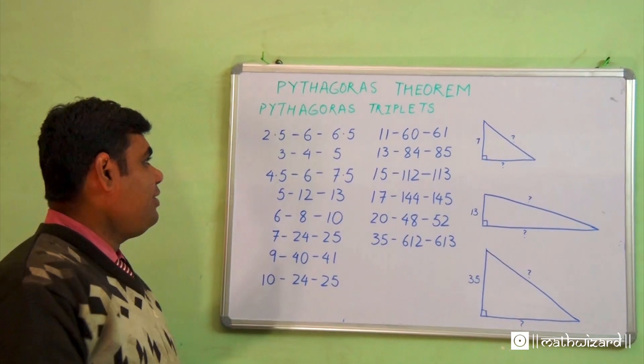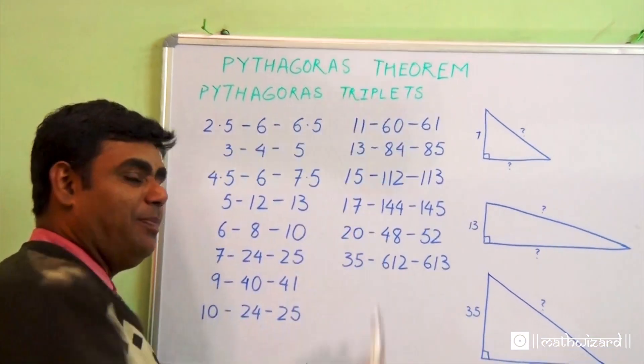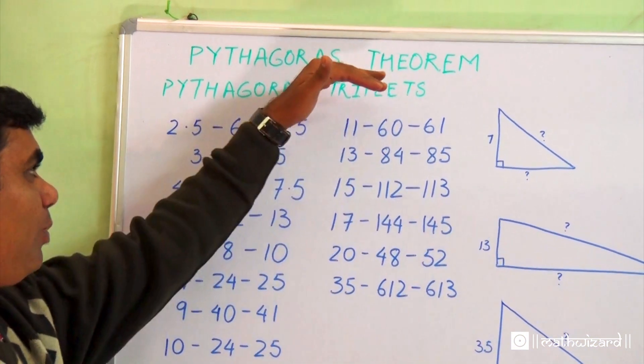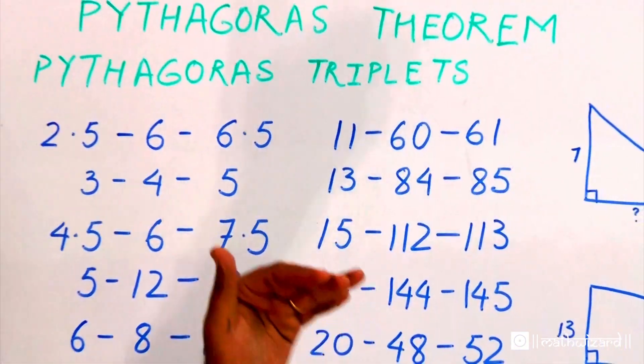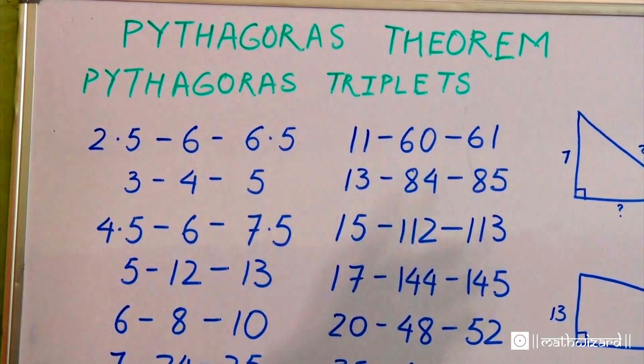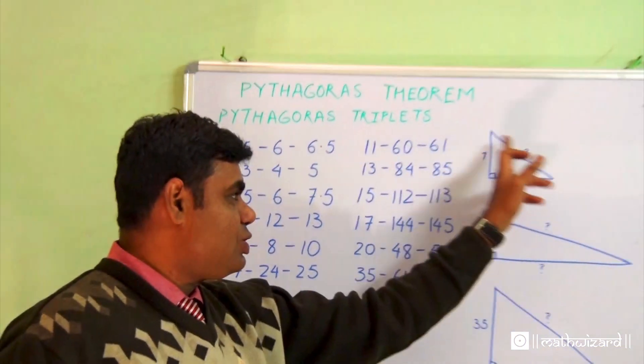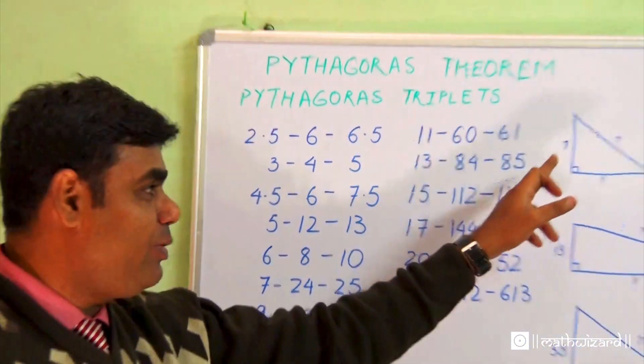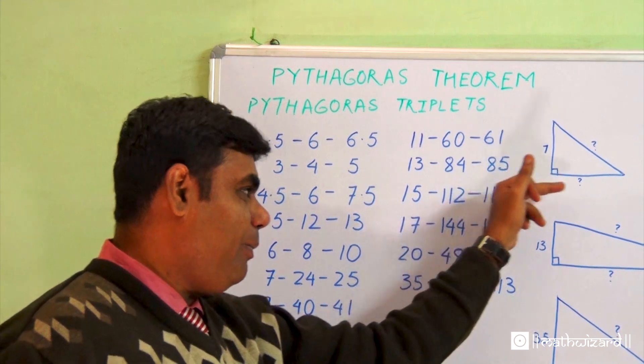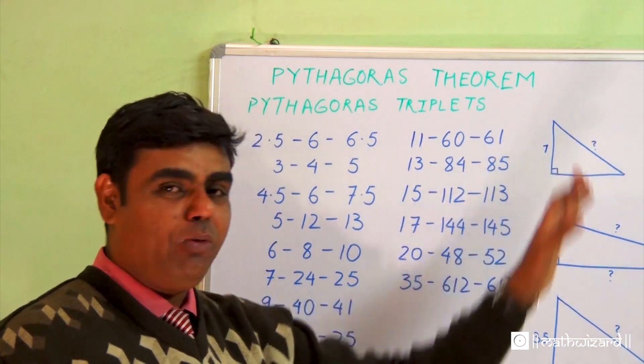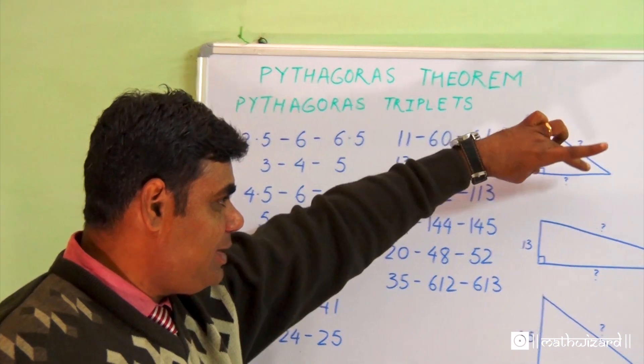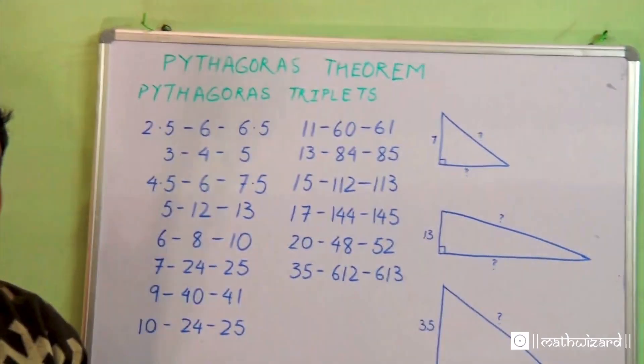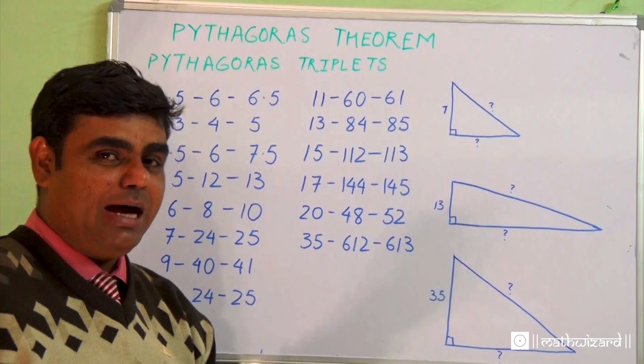Learn about Pythagorean triplets. It comes under the topic Pythagorean theorem. In senior classes we learn the Pythagorean theorem, which states the square of the hypotenuse is equal to the sum of the height plus the base. The square of this is equal to the square of this plus this.